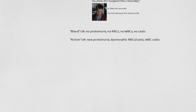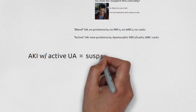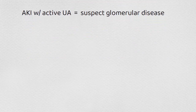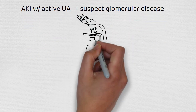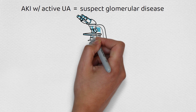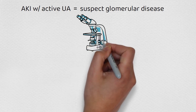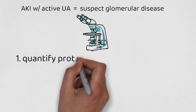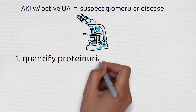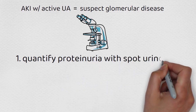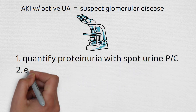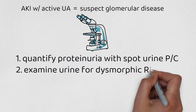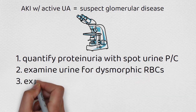Now that we've established we have AKI with active UA and we're suspecting glomerular disease, what's the stepwise process to establish we're dealing with possible GN? It involves a microscope: first, quantifying proteinuria with a spot protein-to-creatinine ratio, then looking at the urine with a microscope to see if there are dysmorphic cells, and examining to see if there are casts.